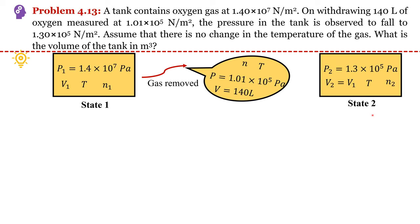At the final state, the number of moles left is assumed to be n2. Since we are using the same container, volume at initial and final state remains the same. We perform a mole balance: initially we have n1 moles, n moles are drawn out, and we are left with n2 moles. So as per mole balance: n1 equals n plus n2, and we call this Equation 1.